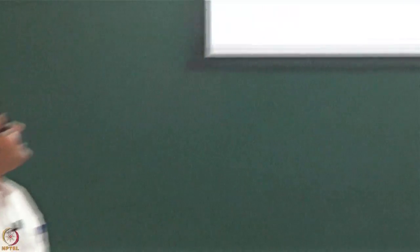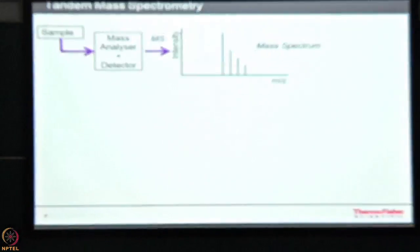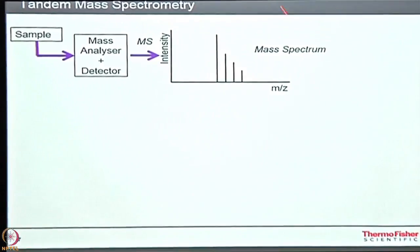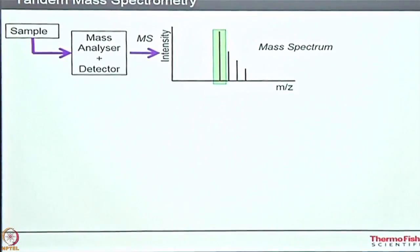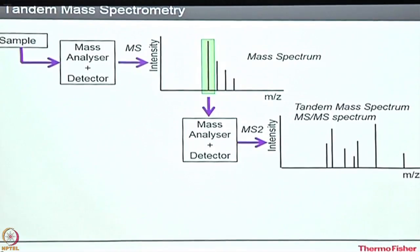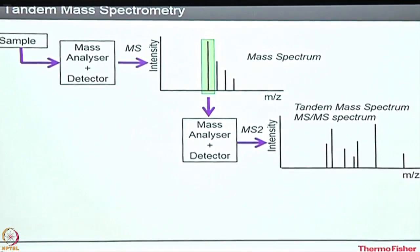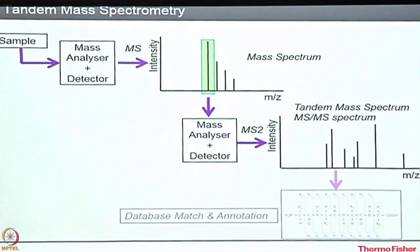Here is how the mass spec works after injection. We inject a sample to the mass spec through the mass analyzer and detector and get the MS1 spectra. From this MS1 spectra, we select one peak, fragment it, and get MS2 spectra. We then search the fragmentation against a database, find the B and Y ions, get the database match, and identify the peptides. From the peptides, we can determine which protein is present in the sample.